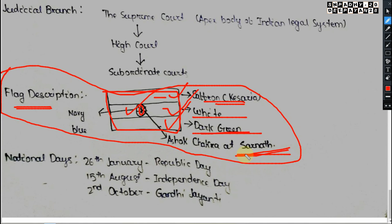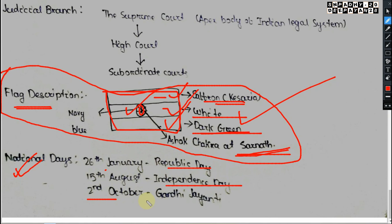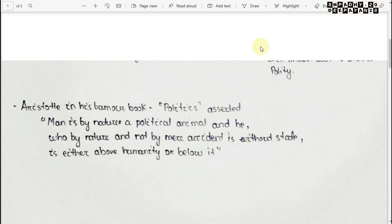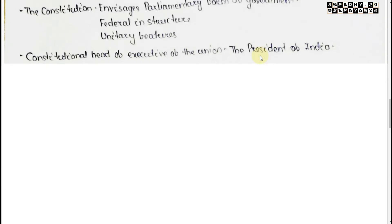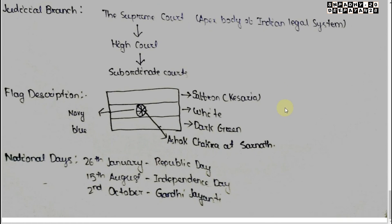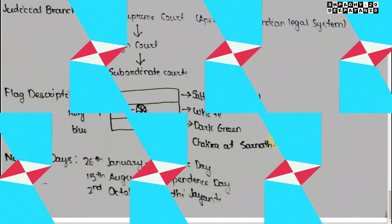The national days are: 26 January — Republic Day; 15 August — Independence Day; and 2 October — Gandhi Jayanti. These are very important foundational points of Indian Polity. We will discuss all historical and constitutional topics one by one. Thank you, have a nice day.